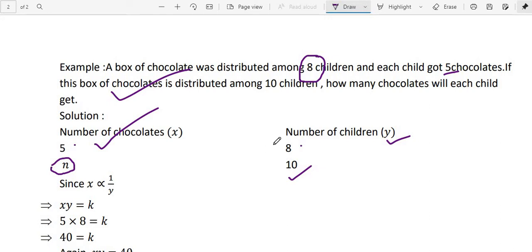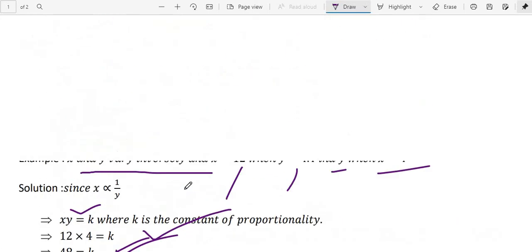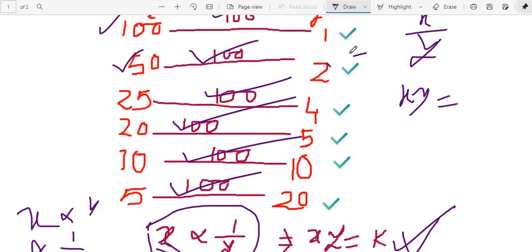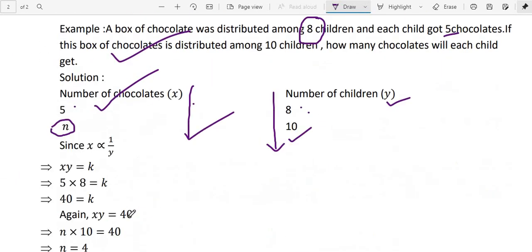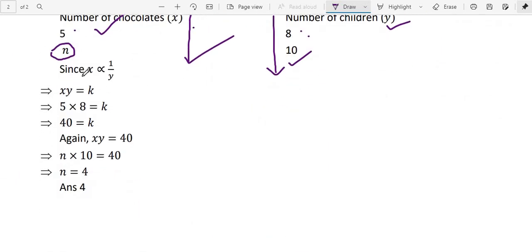Now see if number of children increase, then number of chocolates each gets will be decreased. So one side is increasing, one side will be decreasing. Almost same problem like this one. I have taken 100 chocolates. This side is increasing, then this side will be decreasing.